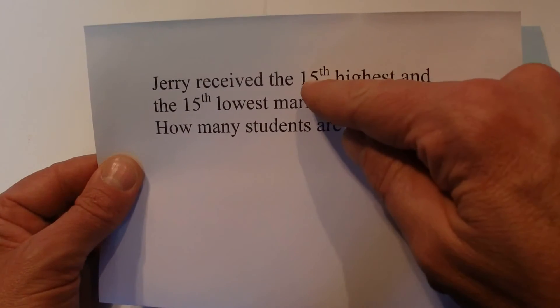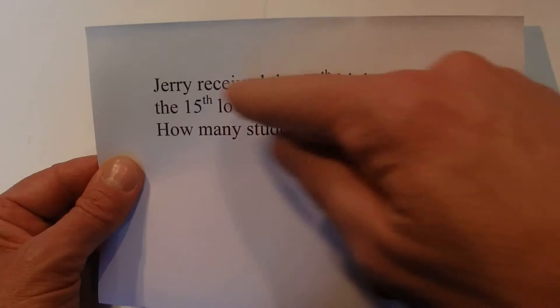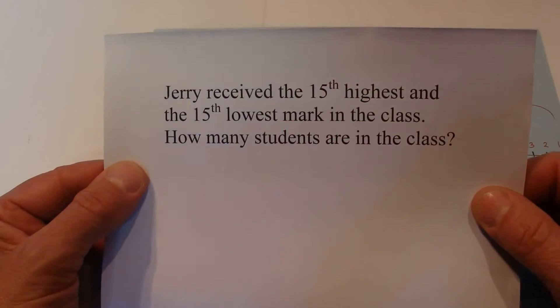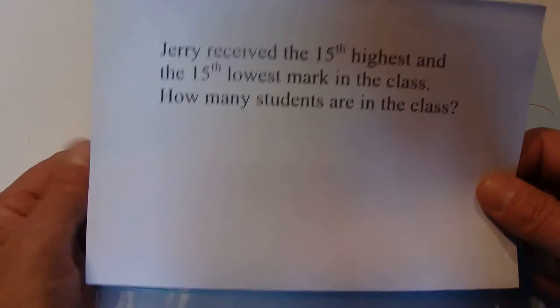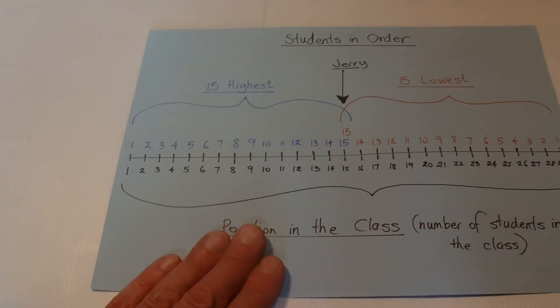30 in the class. If it's the 15th highest and the 15th lowest, then you've got to add those two numbers together to come up with 30. But because that's the most obvious answer, it's obviously not going to be correct.